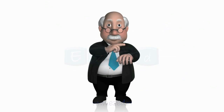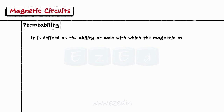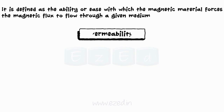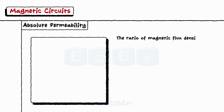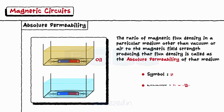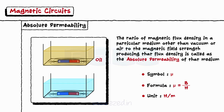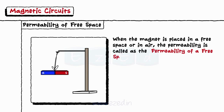The fourth term we will study is permeability. It is defined as the ability or ease with which the magnetic material forces the magnetic flux to flow through a given medium. For any magnetic material, there are two permeabilities: absolute permeability and relative permeability. The ratio of magnetic flux density in a particular medium, other than vacuum or air, to the magnetic field strength producing that flux density is called as the absolute permeability of that medium. It is denoted by mu and is given as mu = B/H. The unit of permeability is Henry per meter. When the magnet is placed in free space or in air, the permeability is called permeability of free space, given by mu zero, with a constant value equal to 4π × 10⁻⁷.